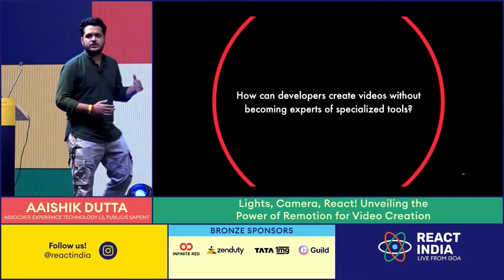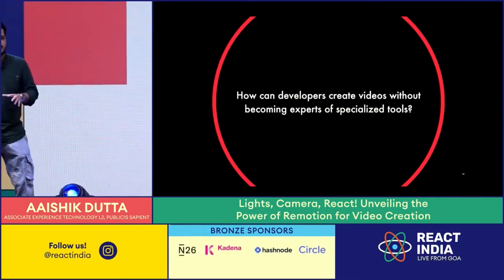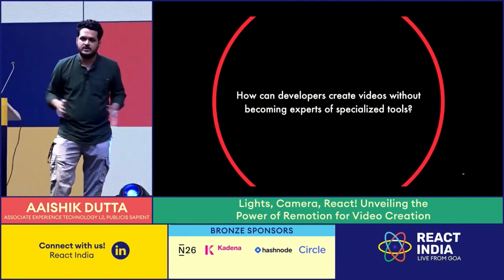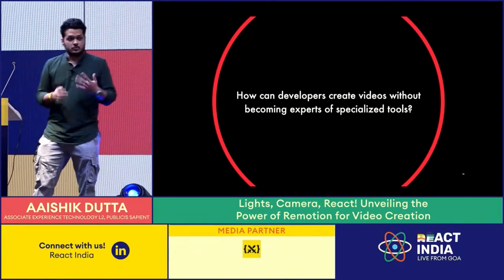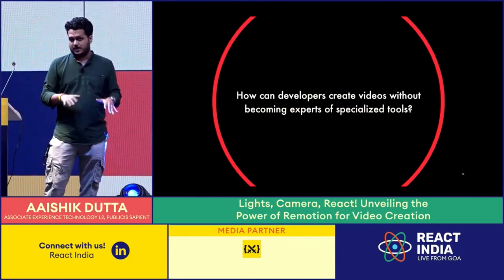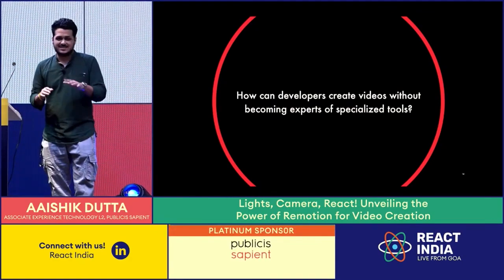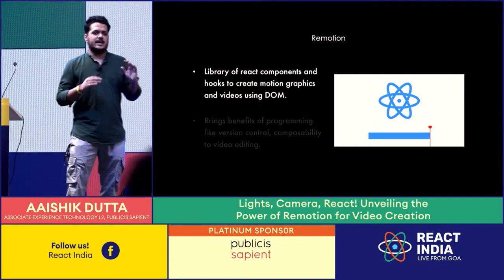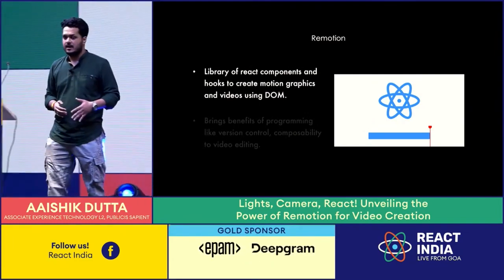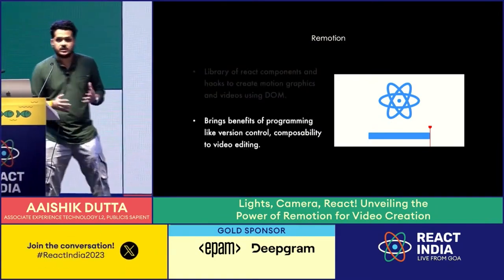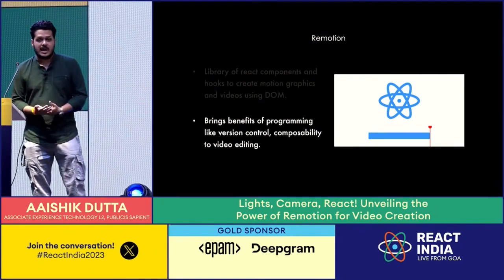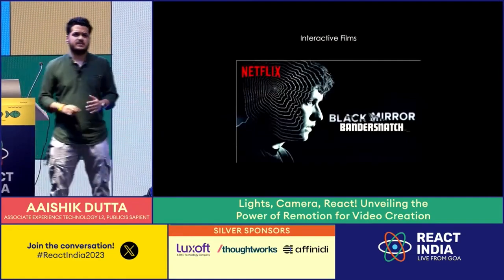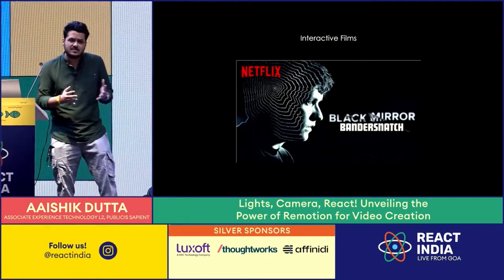These examples had some form of programmable content in them. So the question is: how can developers in the React ecosystem leverage the power of personalized content in their workflows without becoming experts in Adobe After Effects — which has a high learning curve? The answer I give today is Remotion. Remotion is a library to create videos using React, and it brings the power of version control, parameterization, and composability to video creation. The core library is just a bunch of React components and hooks.